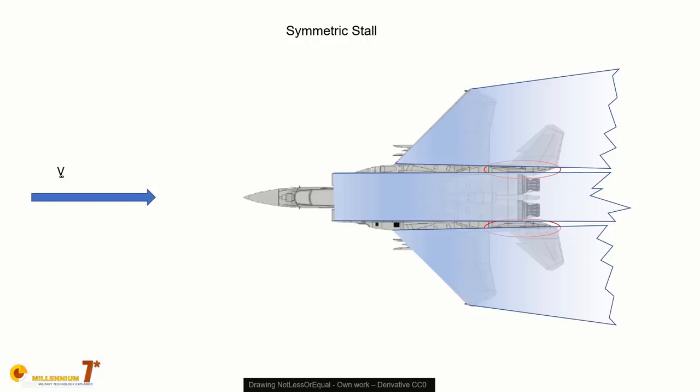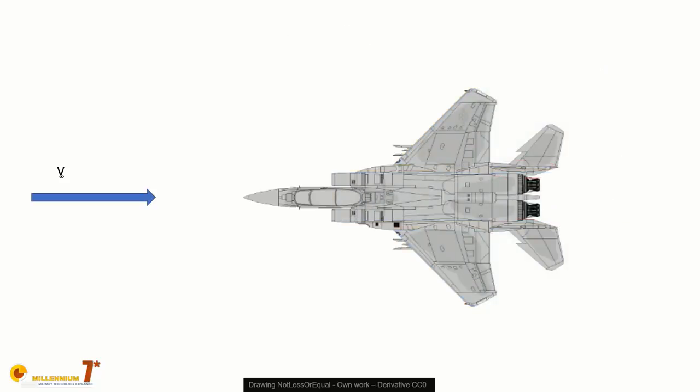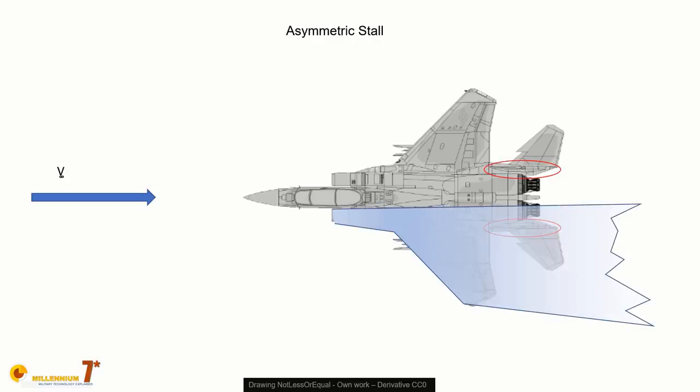Now, this is a symmetric stall, but in the case the stall is asymmetric, like in this picture, you may see that at least one of the stabilizers remains in clear flow and remains effective, while the other is fully immersed into the aerodynamic shadow of the stalled wing. Symmetric stall is quite rare. The norm is actually an asymmetric stall, so this is a condition that happens very often.